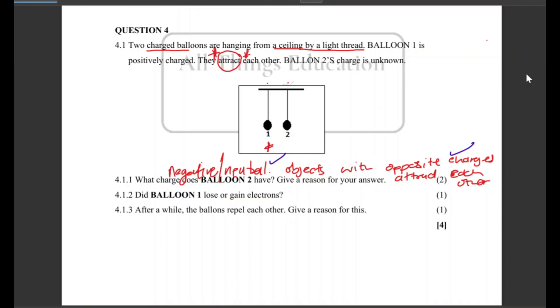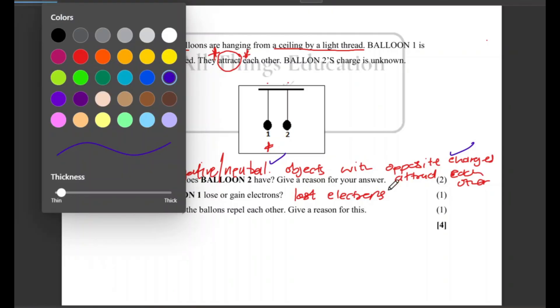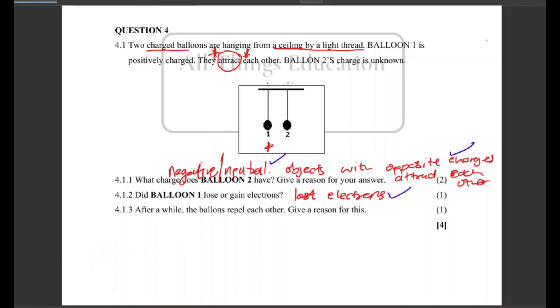Then 4.1.2: Did balloon one lose or gain electrons? It was positively charged, they attracted each other, so definitely balloon one lost electrons. Okay, then one mark.